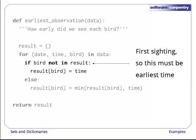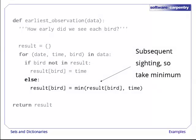If this bird's name is not already a key in our dictionary, this must be the first time we've seen it. The value of time in this record is therefore the earliest we've seen the bird, so we record it in a new entry in the dictionary. Otherwise, if there's already an entry for this bird in the dictionary, we record the minimum of the stored time and the new time.